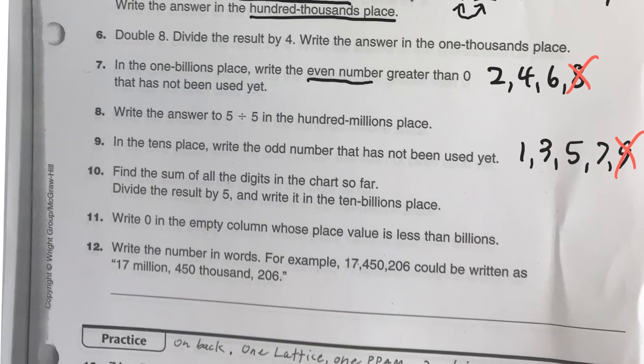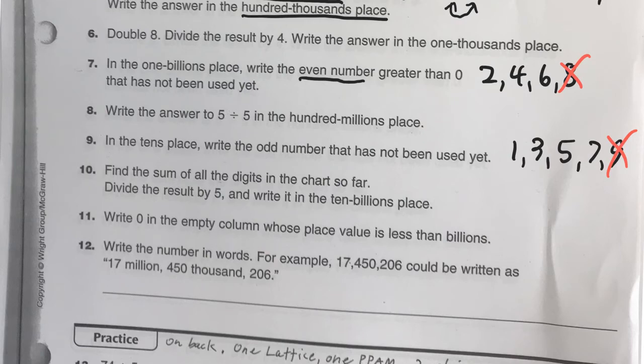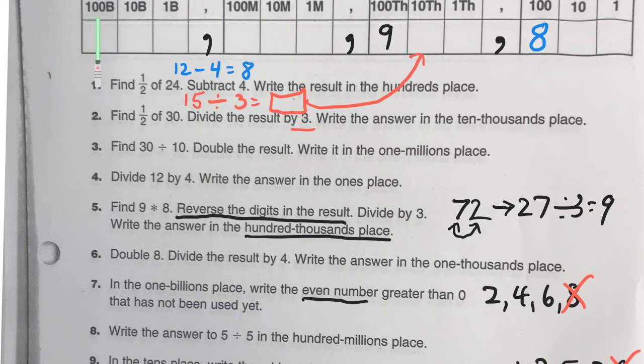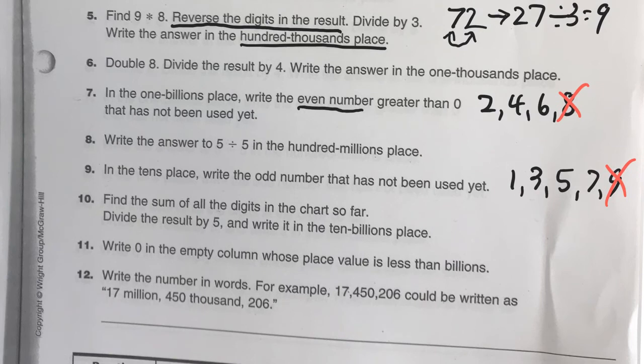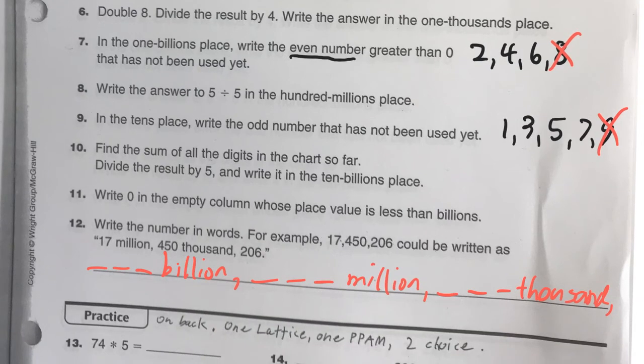And then, finally, you're going to write the number in words. The way that's going to work is, whatever you've got here would be billion. And then, the next number would be million. And then you have thousand. And then, to end it, you can just say the final digits, but I'm out of space.